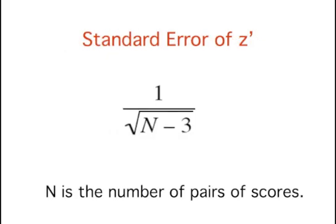In order to do any calculations using the sampling distribution of z', you need to know its standard deviation. The standard deviation of this distribution, also called the standard error of z', is equal to 1 over the square root of n minus 3, where n is the number of pairs of scores.